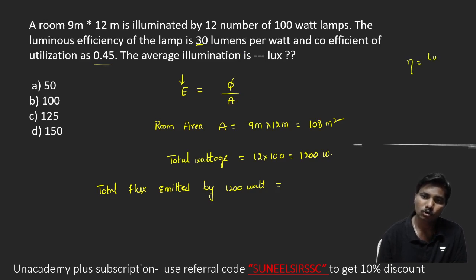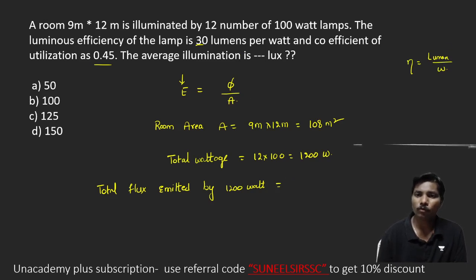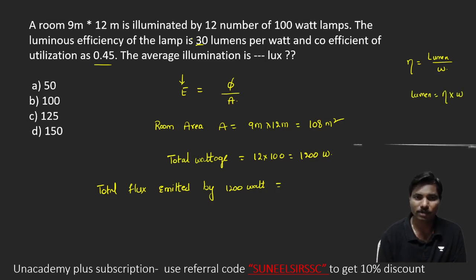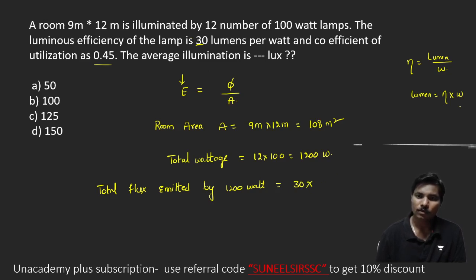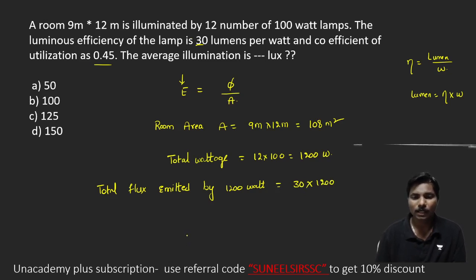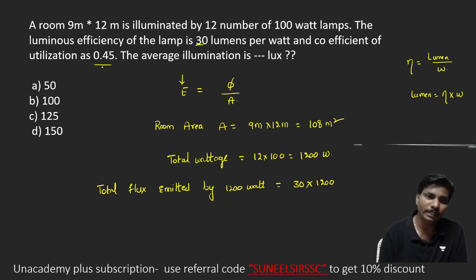Efficiency is lumens per watt. To get lumens, multiply efficiency by wattage. Efficiency is 30 lumens per watt and wattage is 1200 watts. So total flux emitted = 30 × 1200 = 36,000 lumens. They have also given the utilization factor of 0.45.